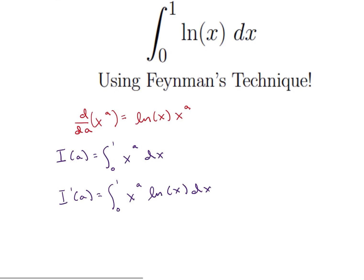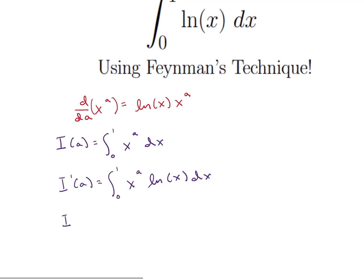But what I want you to notice is that if I took i prime of 0, if I plug in 0 for a, that's going to give me the integral from 0 to 1 of x to the 0 times ln of x, which just happens to be the integral from 0 to 1 of ln of x dx. So it turns out that our original equation is i prime of 0 if we have i of a as this integral up here.